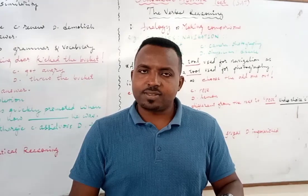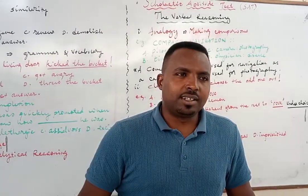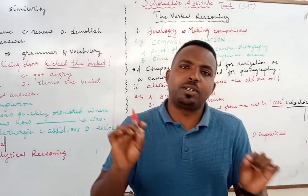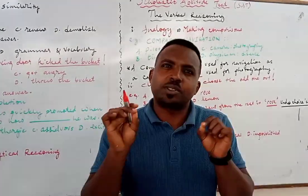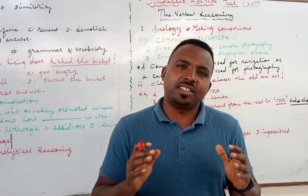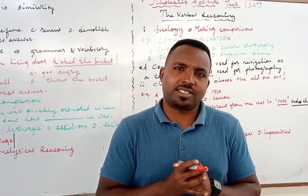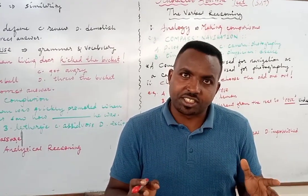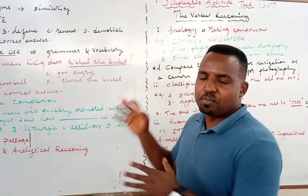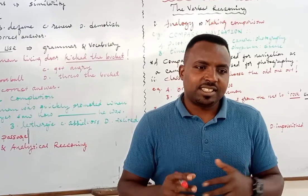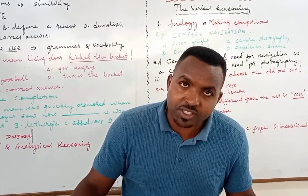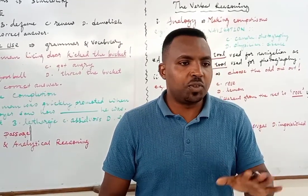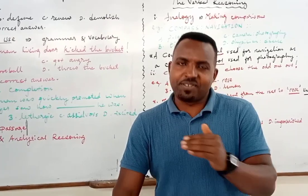The Ethiopian entrance exam consists of 60 items divided into two sections: the verbal reasoning and the quantitative reasoning. The verbal reasoning refers to the language part, and it's got a series of sections. We've been dealing with such things for years, so we are quite at home with it. I hope if you attend this lesson you will benefit from it.